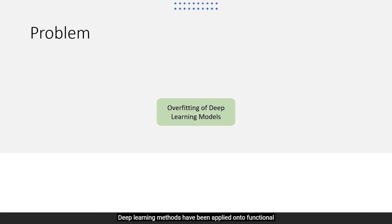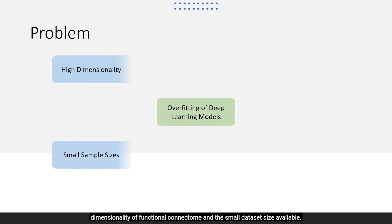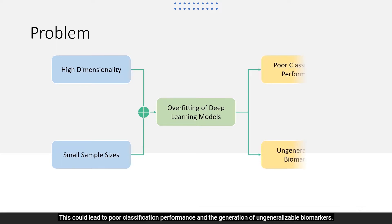Deep learning methods have been applied onto functional connectome to classify between healthy and diseased subjects. However, these methods were prone to overfitting due to the high dimensionality of functional connectome and the small dataset size available, which could lead to poor classification performance and the generation of ungeneralizable biomarkers.